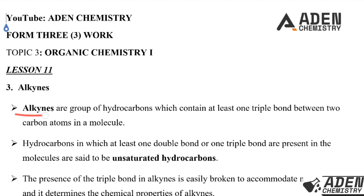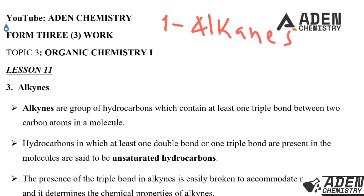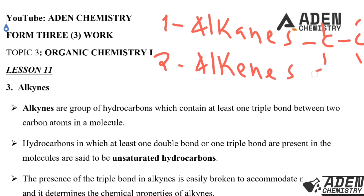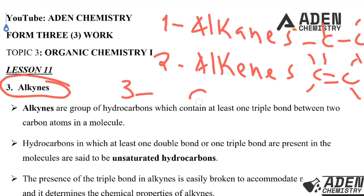Alkynes are a group of hydrocarbons which contain at least a triple bond between two carbon atoms in a molecule. Remember we have three classes of hydrocarbons: alkanes, where between two carbon atoms we have only a single bond; alkenes, where between two carbon atoms we have a double bond; and alkynes, where between two carbon atoms we have a triple bond.